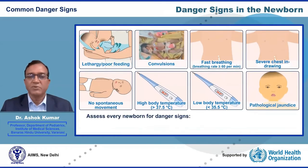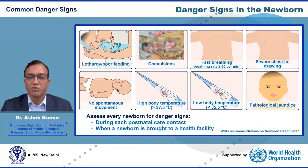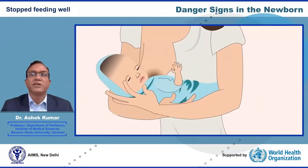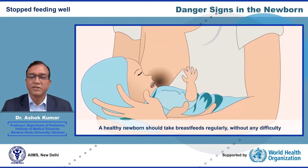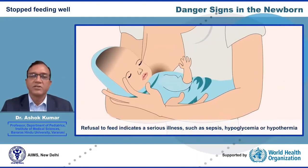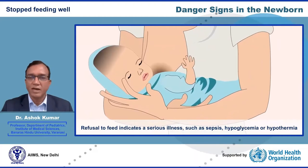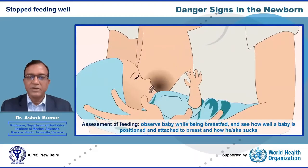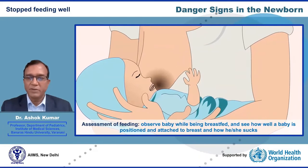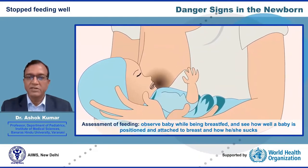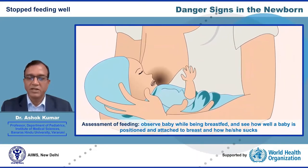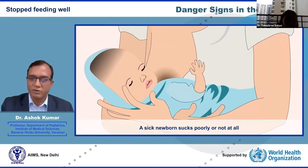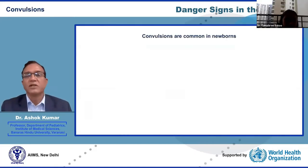Every newborn should be assessed for danger signs at each postnatal care contact or when brought to a health facility. Stopped feeding well is an important danger sign — a healthy newborn should breastfeed regularly without difficulty, and refusal to feed indicates serious illness such as sepsis, hypoglycemia, or hypothermia. Feeding status is assessed by observing positioning and attachment at breast and how well the baby sucks. A sick newborn sucks poorly or not at all.